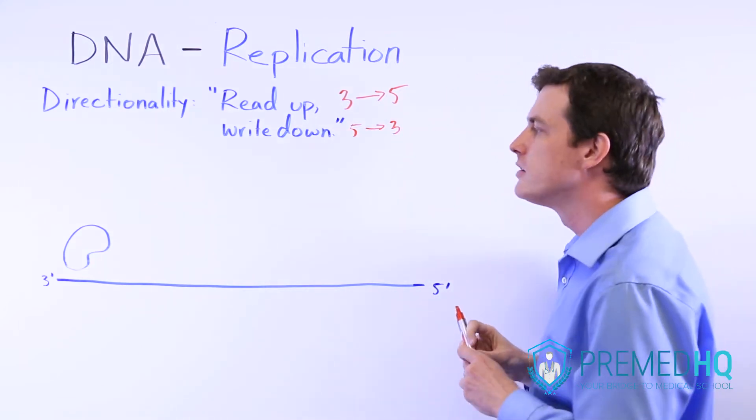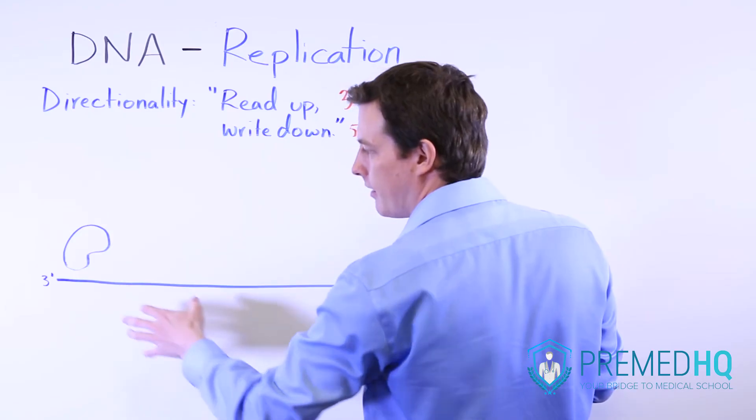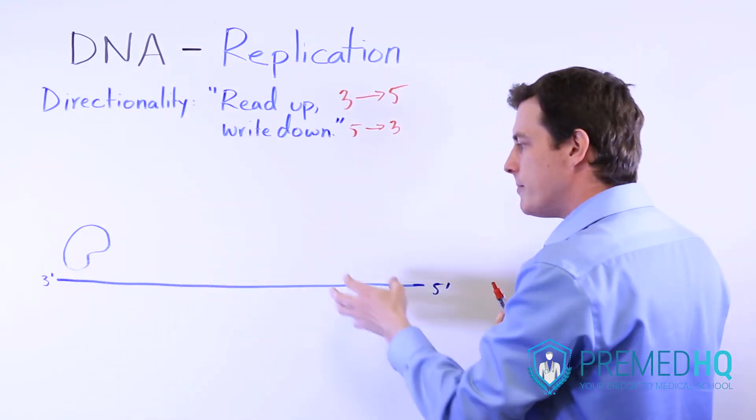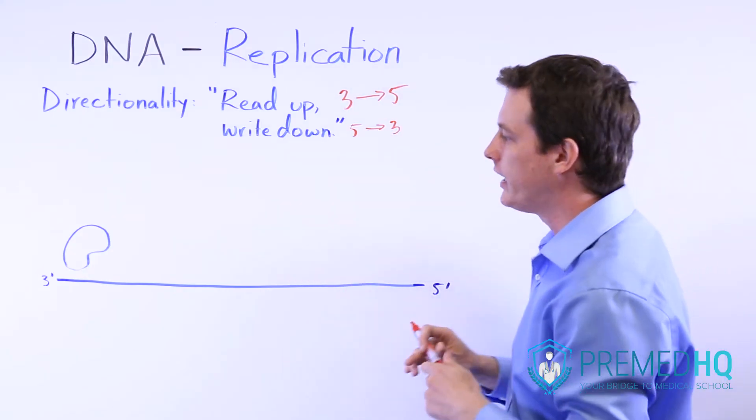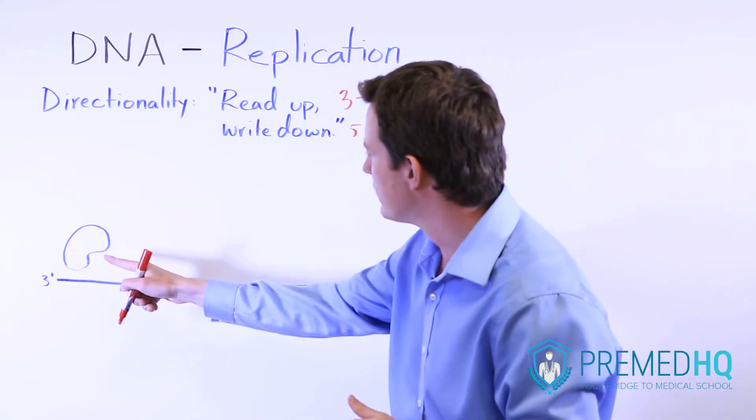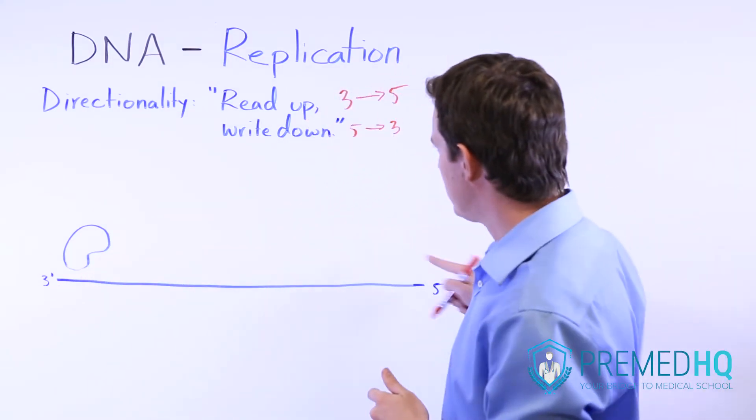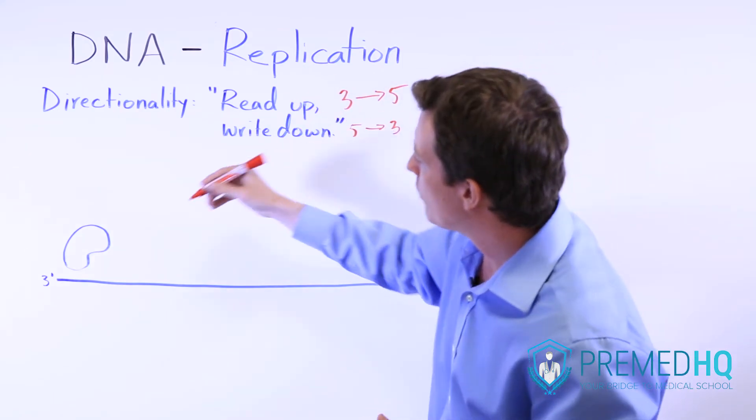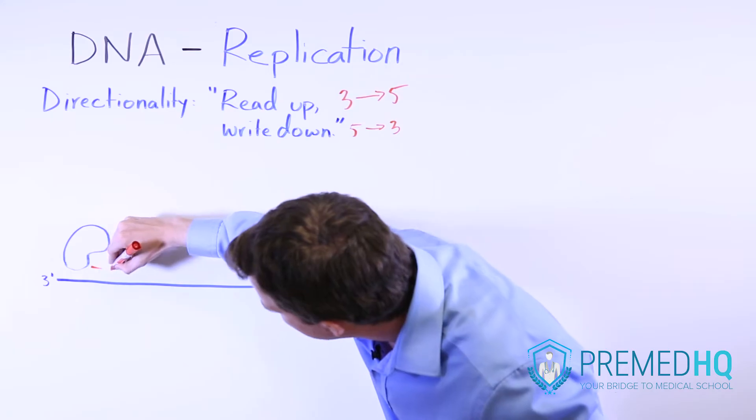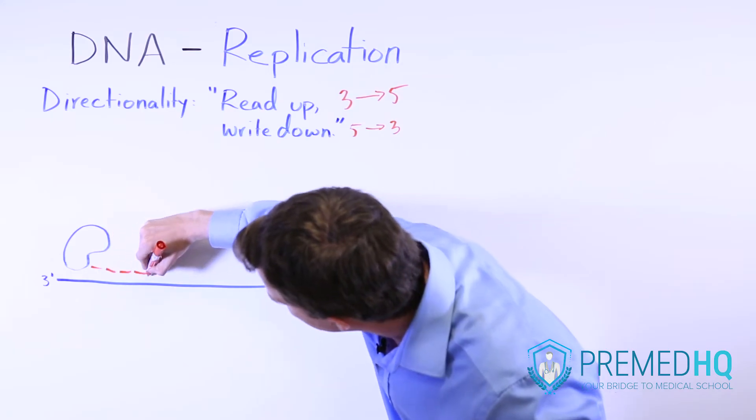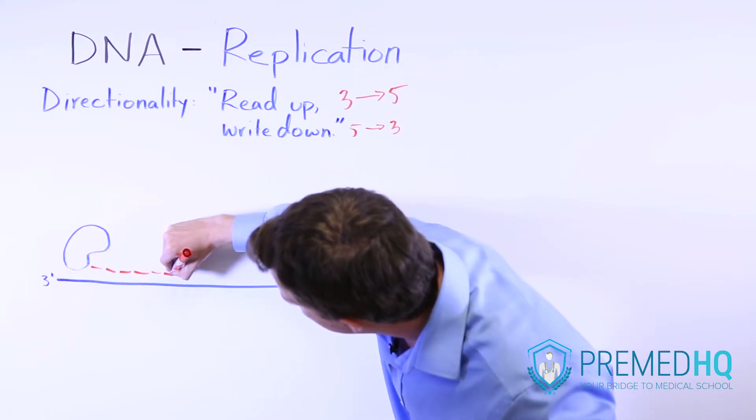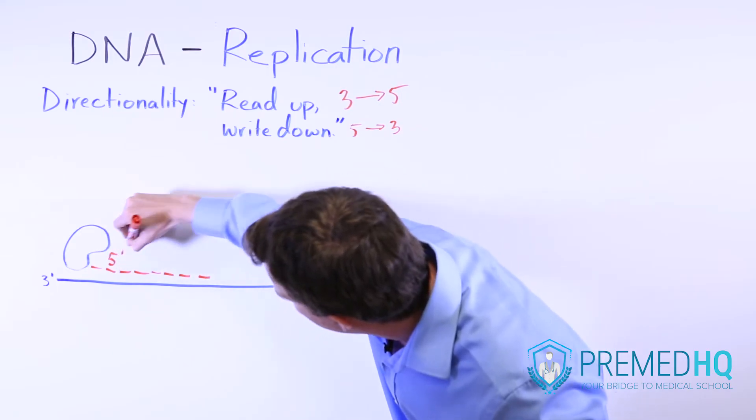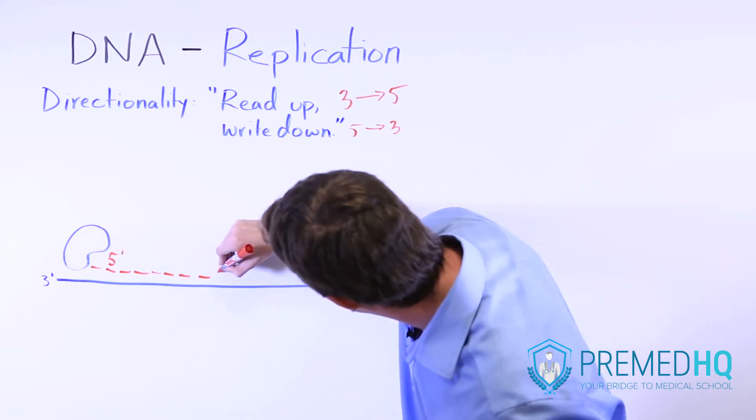What this means is that here's our polymerase enzyme. And as it moves along, it will be producing a new strand of DNA. It's going to read it in this direction, moving from three to five. So you read up, you read from three to five. But when it writes, it will be writing and producing new segments that are complementary to our template strand, and these will be in the five prime to three prime direction.